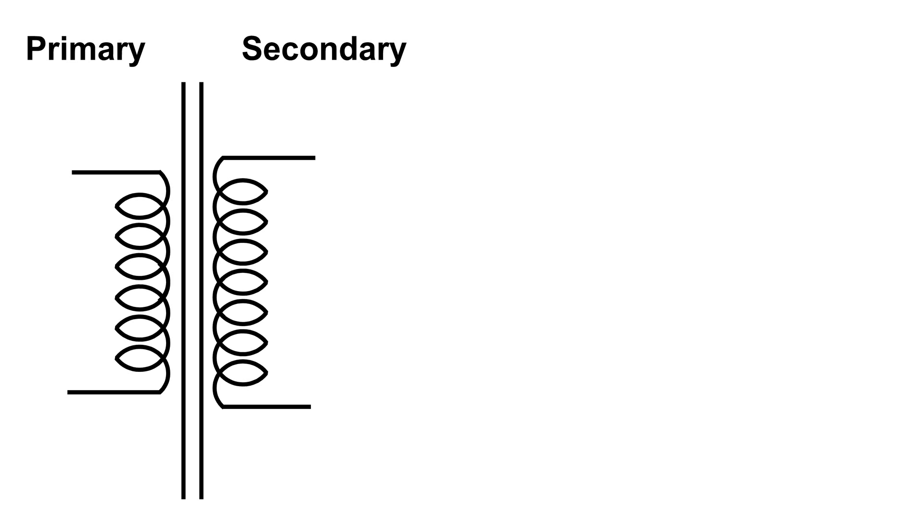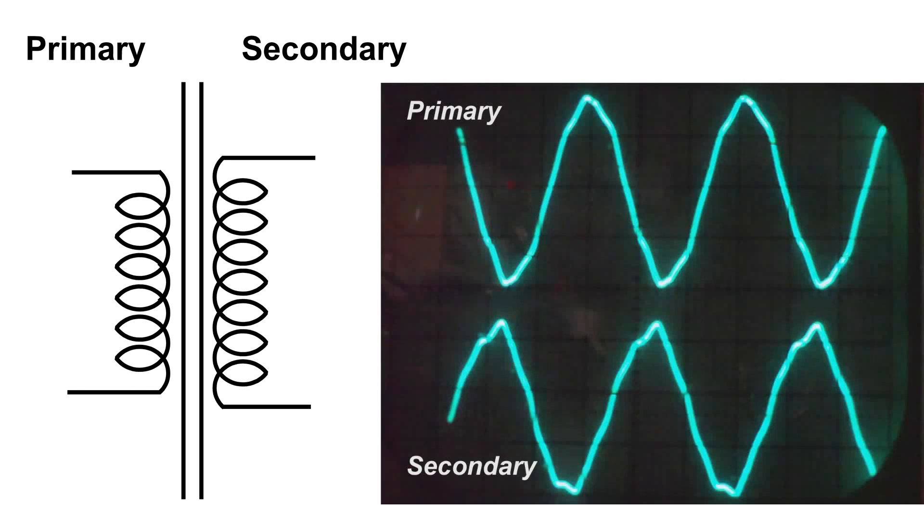Here's the diagram of the transformer again. And this is what the primary and the secondary looks like on an oscilloscope. The primary is at the top. And you can see that the primary is just slightly higher in voltage than the secondary.